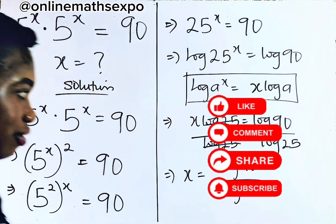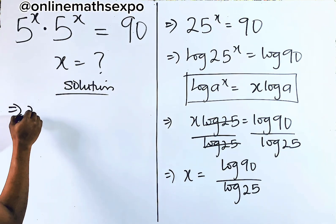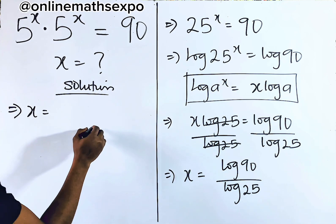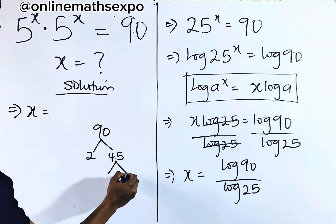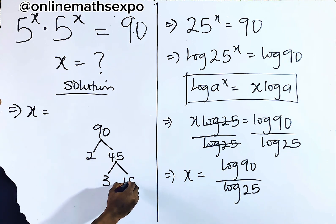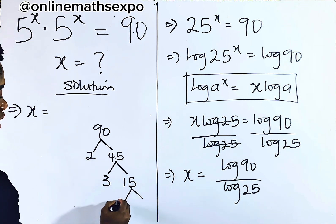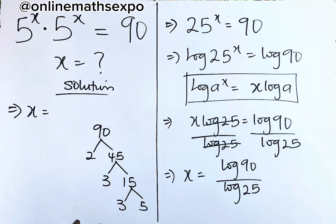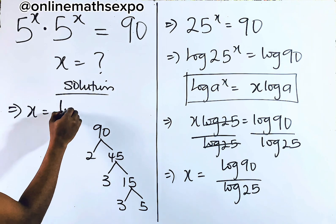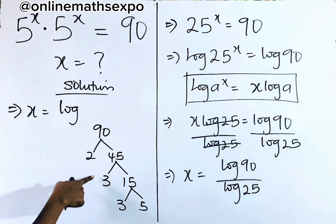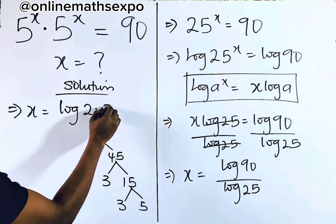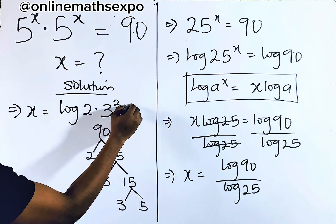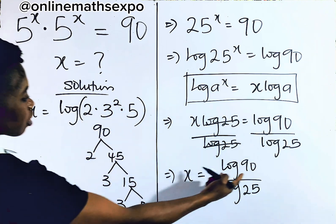Let's still do this together. From here, x is equal to — now we know that 90 is the same as 2 multiplied by 45; 45 is the same as 3 multiplied by 15; 15 is 3 multiplied by 5. So for 90, we observe we have 2 multiplied by 3 squared multiplied by 5.